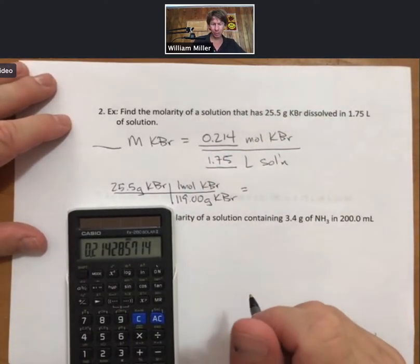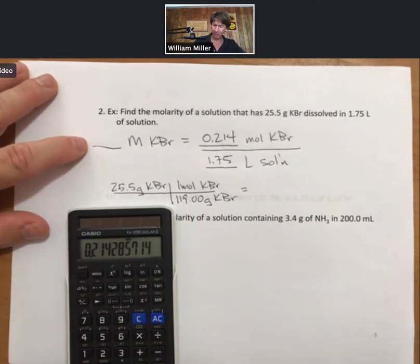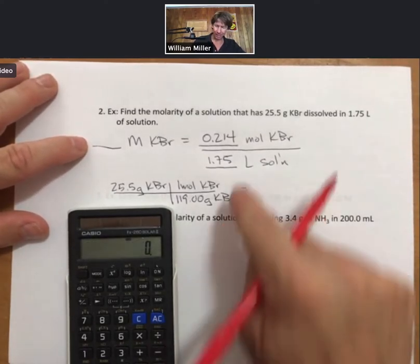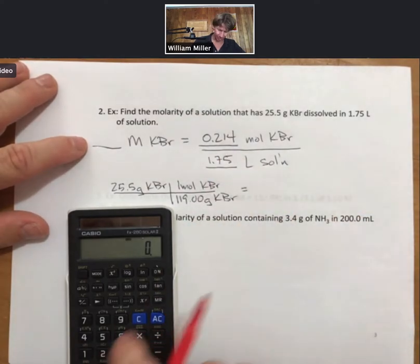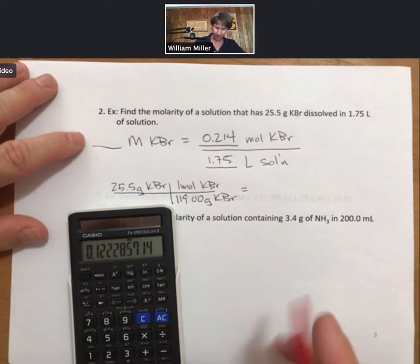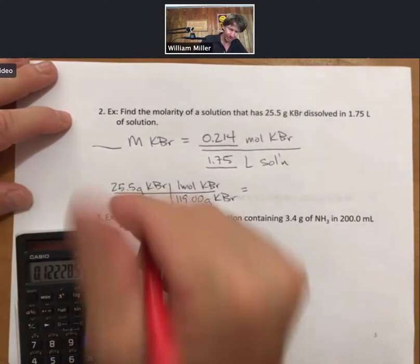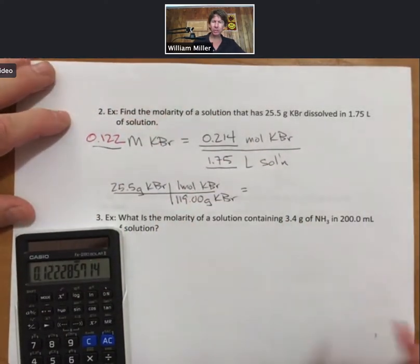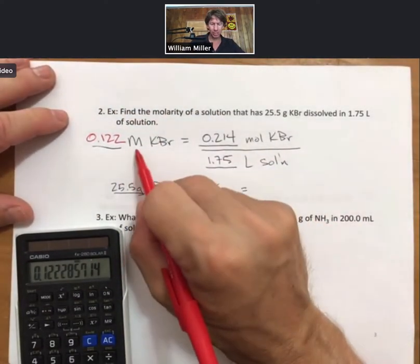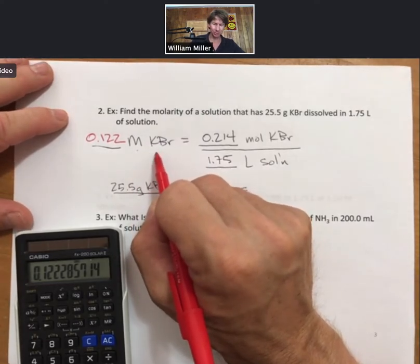However you do this, whether you call this your X and then solve for X, or simply write it on the line, I am going to go to 0.214 divided by 1.75. I get 0.122 molar potassium bromide. Good concentration units include not only the molarity, but what is the solute as well. So please include those.